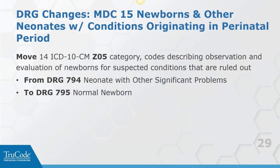Moving from the moms to the babies, in MDC15 they moved 14 codes from the Z05 category - observation of newborns for suspected conditions that are ruled out, which is the whole Z05 category - from DRG 794 for other significant procedures to DRG 795 for normal newborns. This is a decrease in weight for sure: from 1.3425 to 0.1818. That's a pretty big change, but again it's a logical change - they probably shouldn't have been in DRG 794 in the first place.